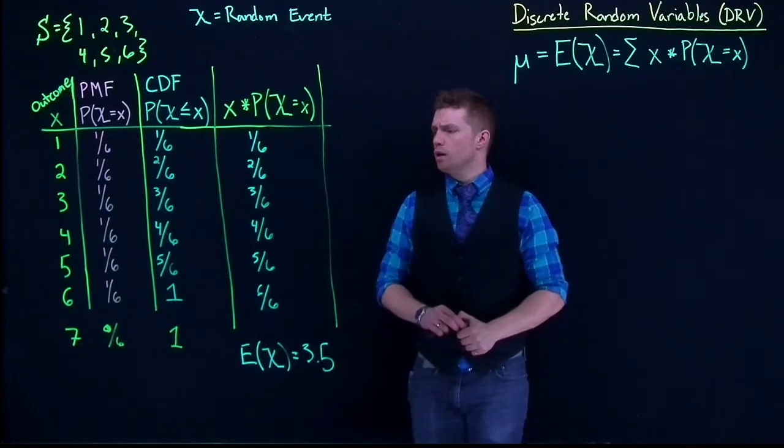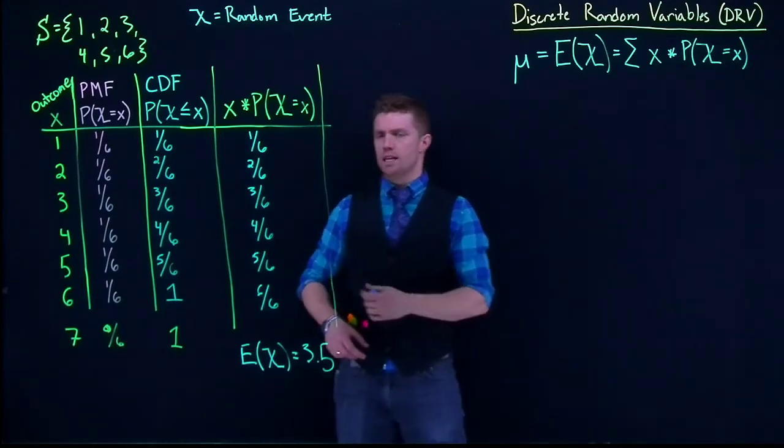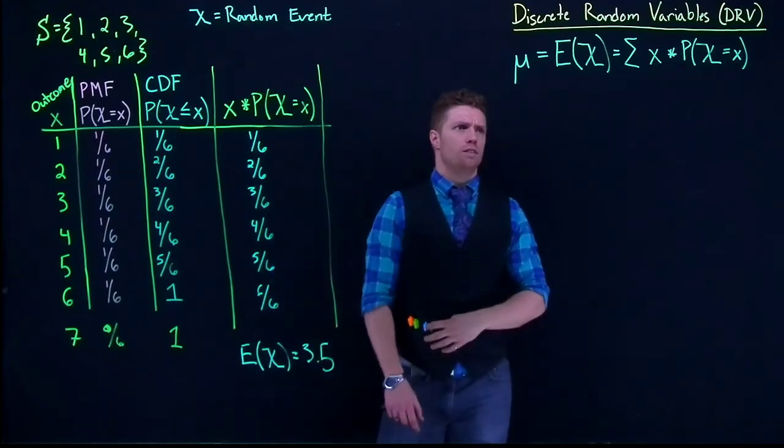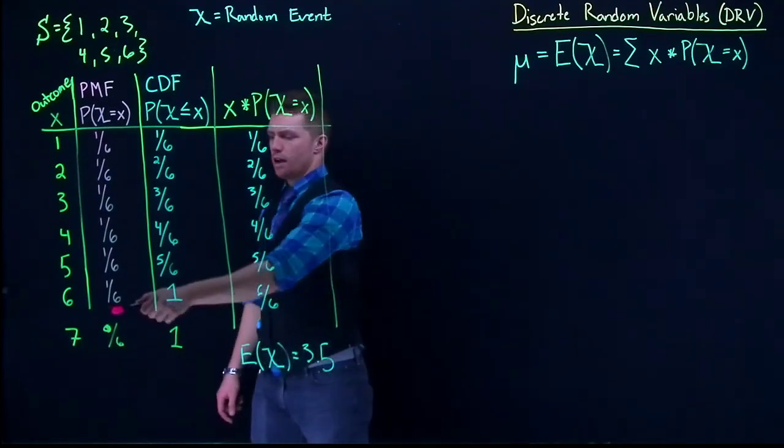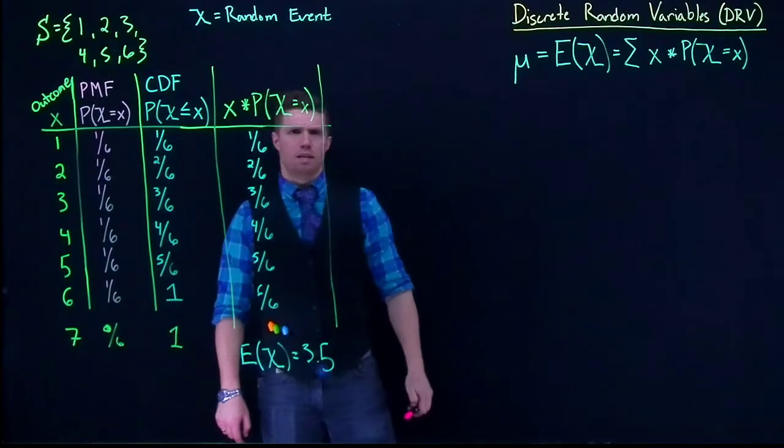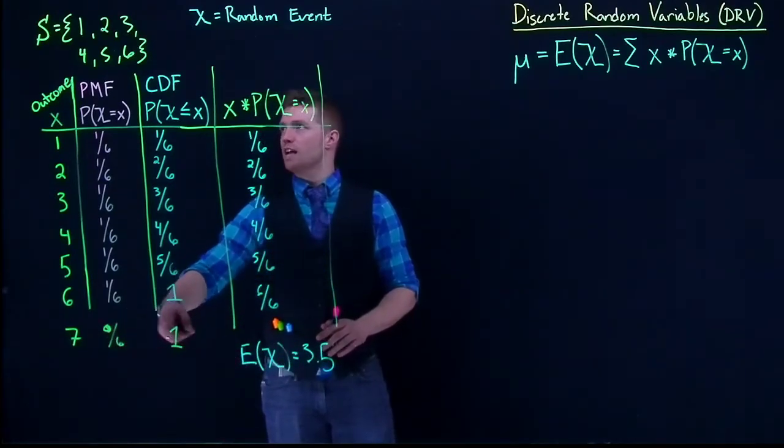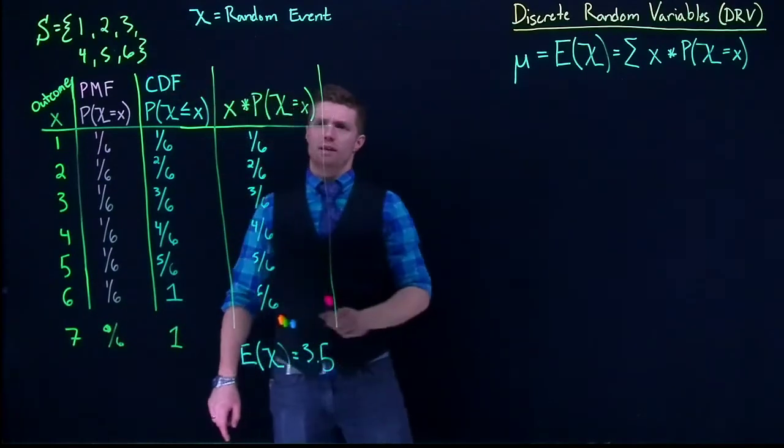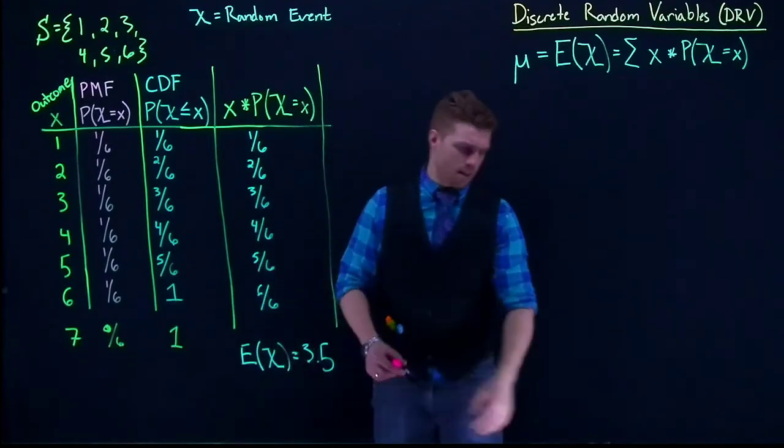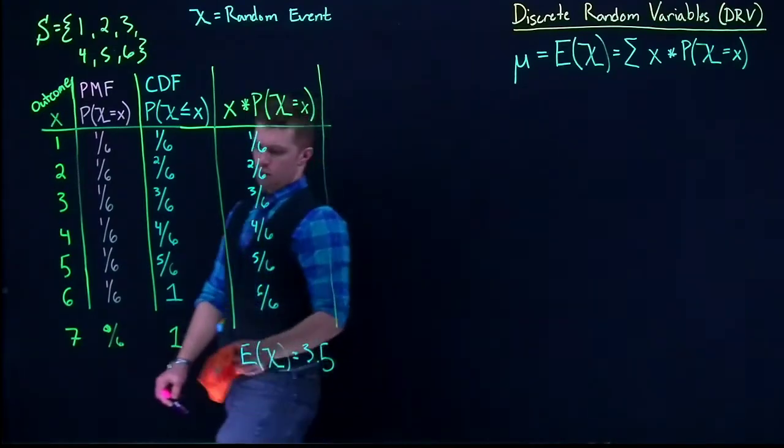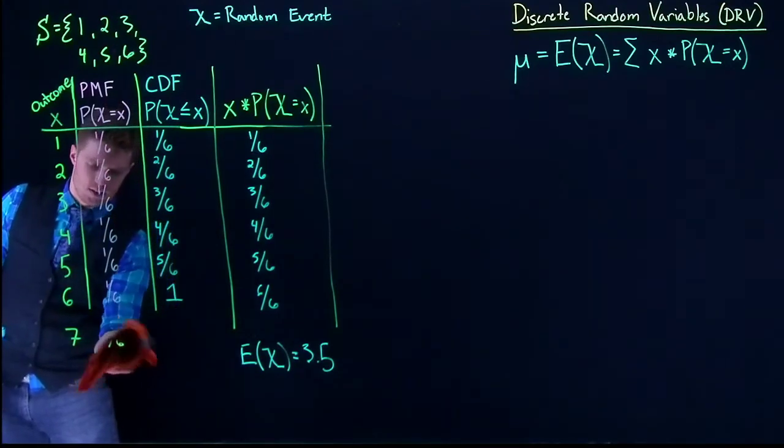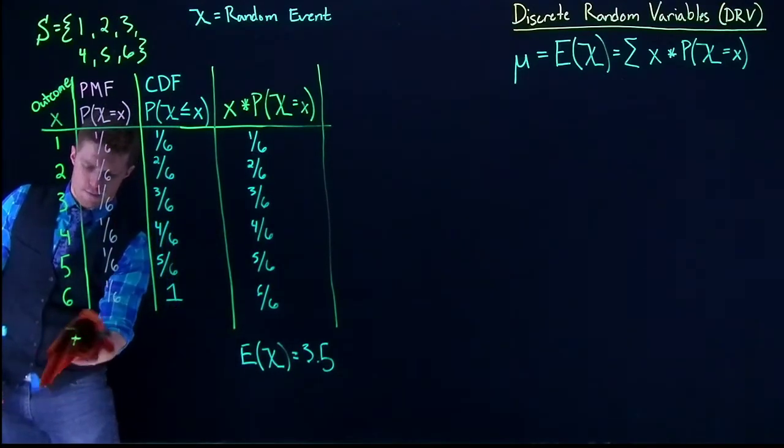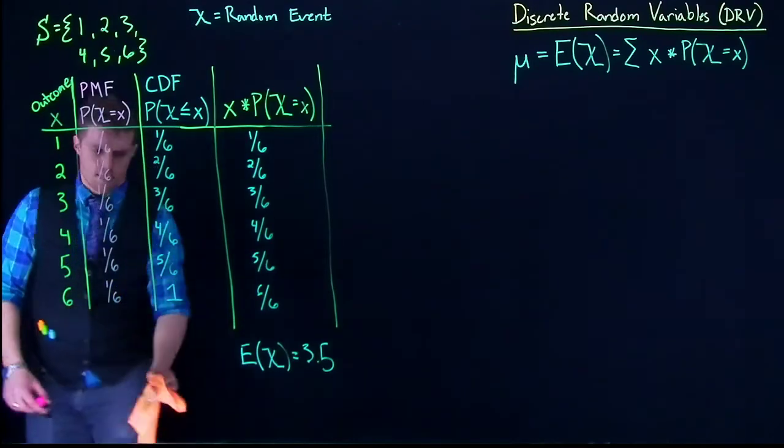All right, let's do one more. Another one that we're often interested in is the variance. Before I move on to the variance, just a note, I left off this 7 because that was kind of outside of what our actual sample space is. So I'm just ignoring that 7. And just for help, I will just go ahead and erase that guy.